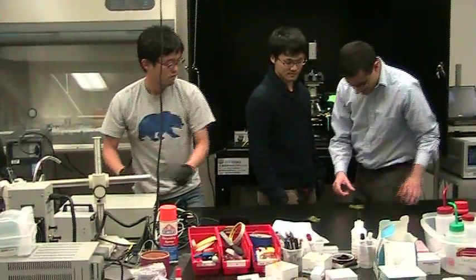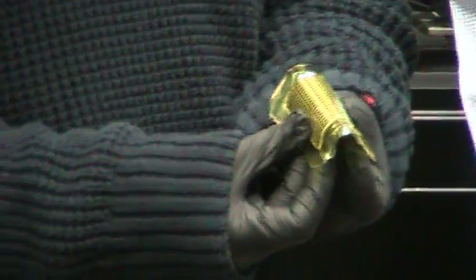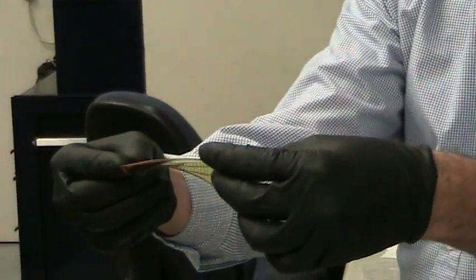Researchers at the University of California in Berkeley are printing electronic skin from nanowires. These flexible, low-power pressure sensors could bring a sense of touch to prosthetic limbs or help robots grip delicate objects.